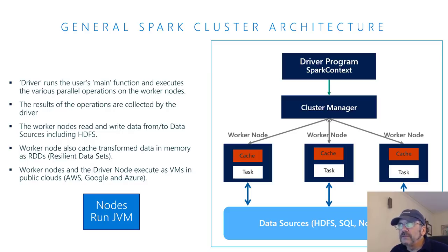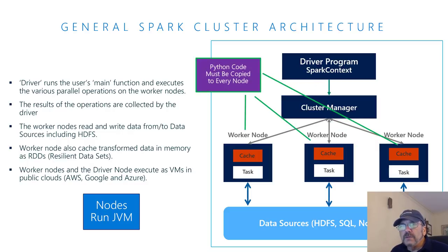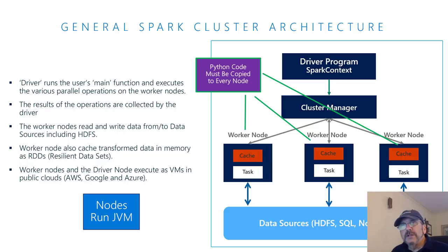The Python code needs to be pushed to each node. In scale-out, you don't bring the data to the program — you bring the program to the data. It's a lot smaller than a petabyte. The nodes will translate the Python code into the API that can run it using the JVM under the covers.